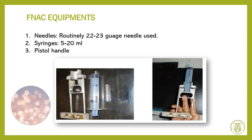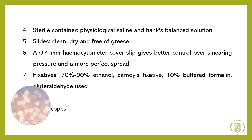For FNAC — fine needle aspiration cytology — the equipments required are needles; the routinely used needles are 22 to 23 gauge needles. Syringes are 5 to 20 ml and the pistol handle. A sterile container is also used which can contain physiological saline and Hank's balanced solution. Slides should be clean, dry and free of grease, and the hematocytometer with a 0.4 mm cover slip, which gives better control over smearing pressure and a more perfect spread.